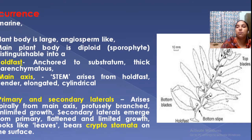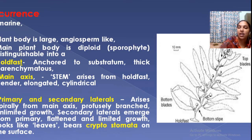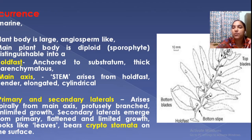From the main axis, it bears a number of structures — the laterals, that is primary laterals and secondary laterals, which arise from the main axis. The leaves or laterals bear stomata.